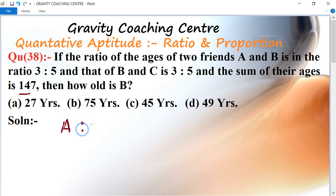A ratio B equal to 3 is to 5, and B ratio C is 3 is to 5.